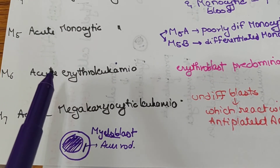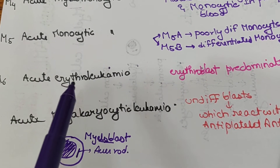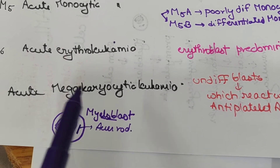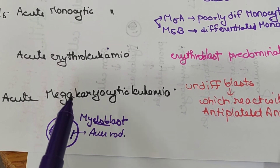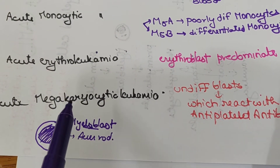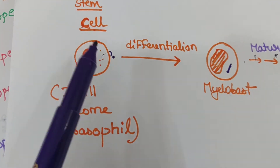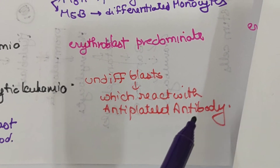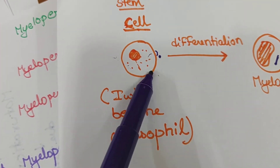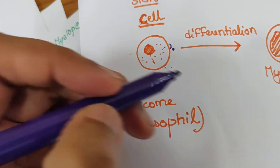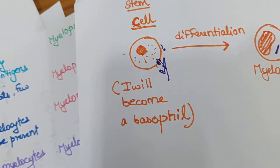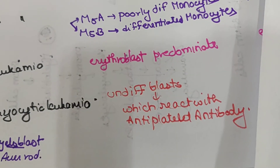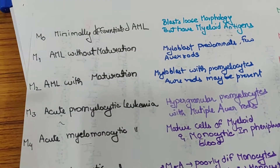M6 is Acute Erythroleukemia — erythro means erythroblasts are predominant. M7 is Acute Megakaryocytic Leukemia — megakaryocytes form blood platelets. In M7, there are undifferentiated blasts which react with antiplatelet antibodies, meaning they have antigens on the surface that bind to antiplatelet antibodies.